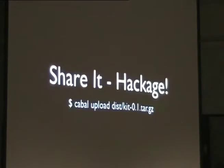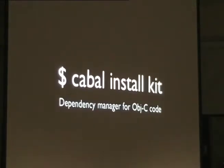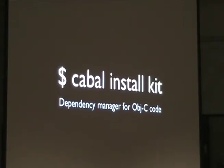The great thing Cabal does is it allows you to share your program or library. You specify whether it's a library or executable, what modules you're exporting, what dependencies it has. If you've got an account on Hackage — the central package repository for Haskell code — you can upload the file, enter your username and password, and you're done. To install a package, all a user does is run `cabal install Kit`, and it grabs all the dependencies, builds them, and installs the binary. Kit is actually a dependency manager for Objective-C code.